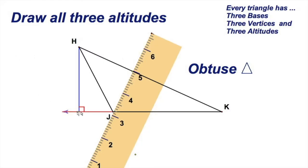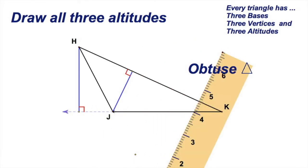I really like these transparent straightedges. That's another altitude, again from a vertex drawn perpendicular to the opposite side. One more.